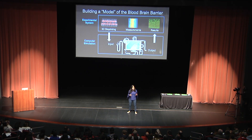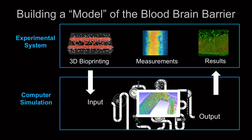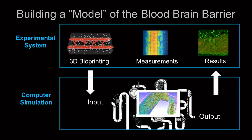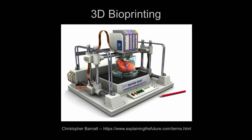We don't fully understand how this process happens because we don't have a good model system. We're not hairless mice, yet this is where a lot of cancer biology work is done. We need to create better models. We have two model systems: one is an experimental system that we 3D bioprint — a physical system where we can test things and make measurements. We also have a computational model developed by a collaborator at Duke — lots of equations and math. Input from the physical system goes in, and ideally it outputs results that predict what we see experimentally.